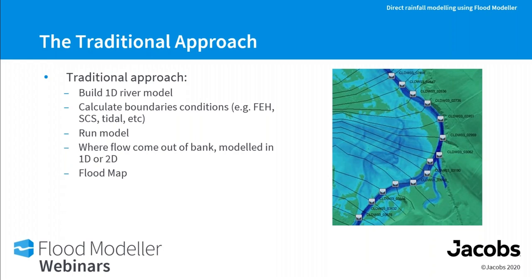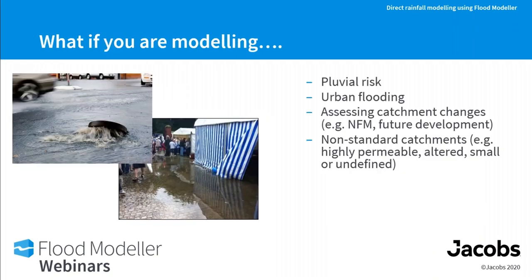Where the traditional approach doesn't work, we see cases like pluvial risk — intense rainfall over an impermeable area where water mobilises overground, flows to low areas, and generates significant flood risk. Combined with this is urban risk, where you have all the features of an urban area: walls, roads, buildings, obstructions, as well as the subsurface pipe network — sewers and highway drainage — which move water around the catchment and change the pattern of flood risk.